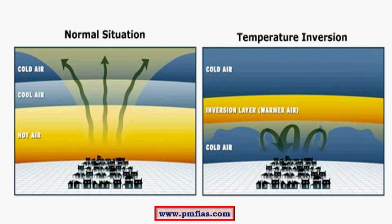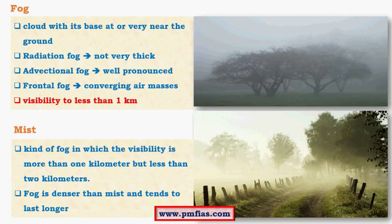Let us look at the concept of temperature inversion, which is important to understand fog. Temperature inversion is a condition where we have a colder layer surrounding the surface of the earth, followed by a warmer layer sandwiched between two colder layers. The concept of temperature inversion is important in understanding fog. Fog is nothing but a cloud with its base near the ground, and there are different kinds of fog: radiation fog, advectional fog and frontal fog. Fog basically occurs when there is temperature inversion.